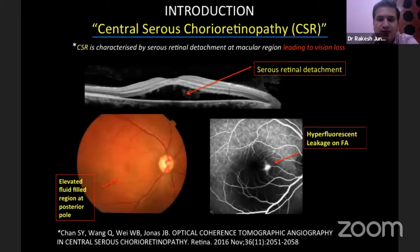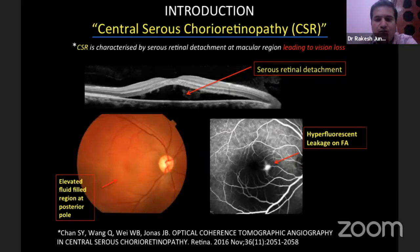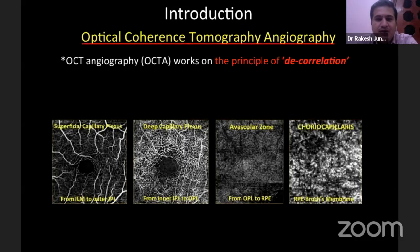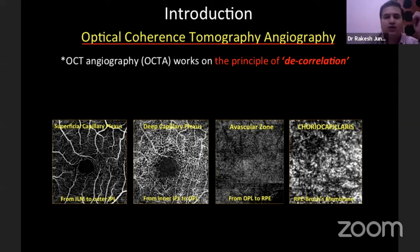As we all know, CSR can lead to vision loss as it affects the macula. We use the age-old time-tested modality in the form of fluorescein angiography to identify the site of leak. Unfortunately, it delineates only the superficial layers, and this is what we are limited to at the moment.